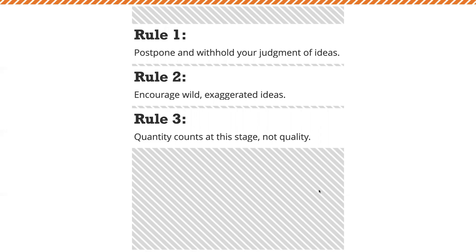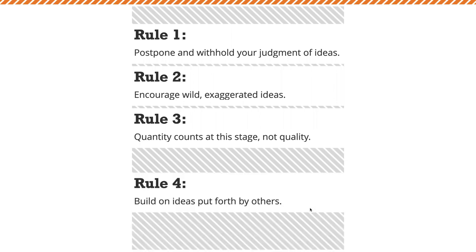These next two rules aren't necessarily going to apply to you in this particular instance, because they're about brainstorming in teams. But once you go out into the working world and start working at creative places, those places have group brainstorming sessions. When you're working in teams, there are a couple of extra rules. Rule number four: build on ideas put forth by others. If you're in a creative team, you're not being proprietary about your ideas — you want the whole team to be better. If someone says something, build on that. They aren't being competitive — they're trying to push the entire team forward.